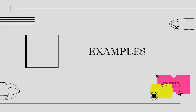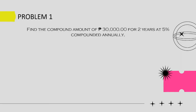Now let us have an example. Find the compound amount earned on P30,000 for 2 years at 5% compounded annually. We have the given: present value P30,000, annual interest 5%, time 2 years, and conversion period 1. We must first convert the rate of 5% into a decimal.